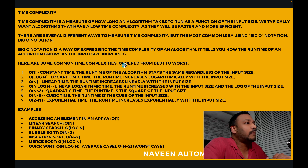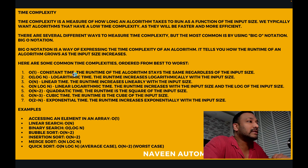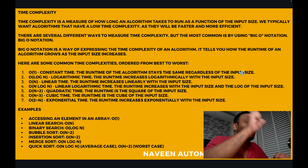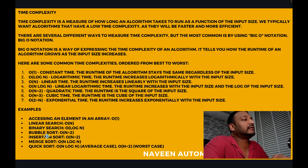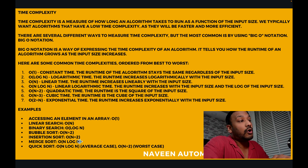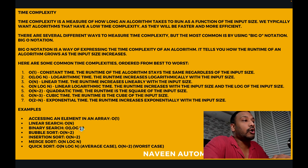Here are some common time complexities ordered from best to worst. O(1) is constant time — the runtime stays the same regardless of input size. In today's session we are going to talk about O(1). Later on, we will see O(n log n), O(n²), O(n³), O(2ⁿ), and we will look at examples like linear search, binary search, and bubble sort. Merge sort gives O(n log n), and binary search gives O(log n).